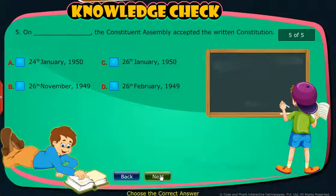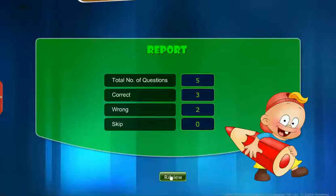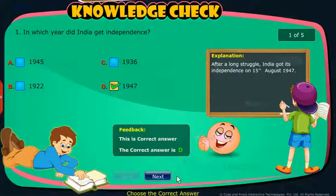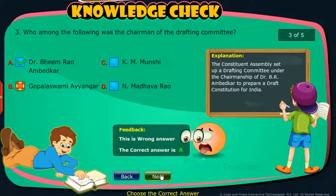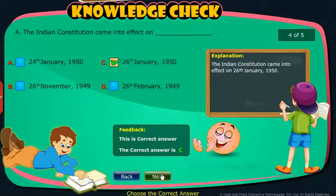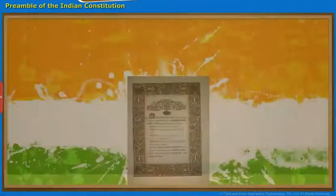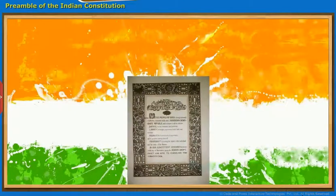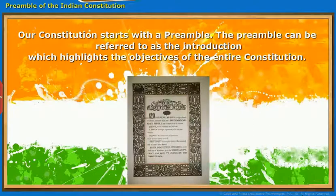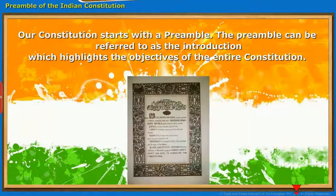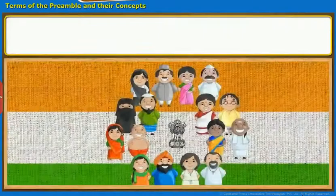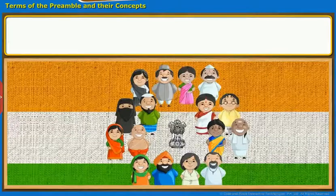Let us look at the Preamble of the Indian Constitution. Our Constitution starts with a Preamble. The Preamble can be referred to as the introduction which highlights the objectives of the entire Constitution. We will now read the Preamble of the Indian Constitution to understand it.